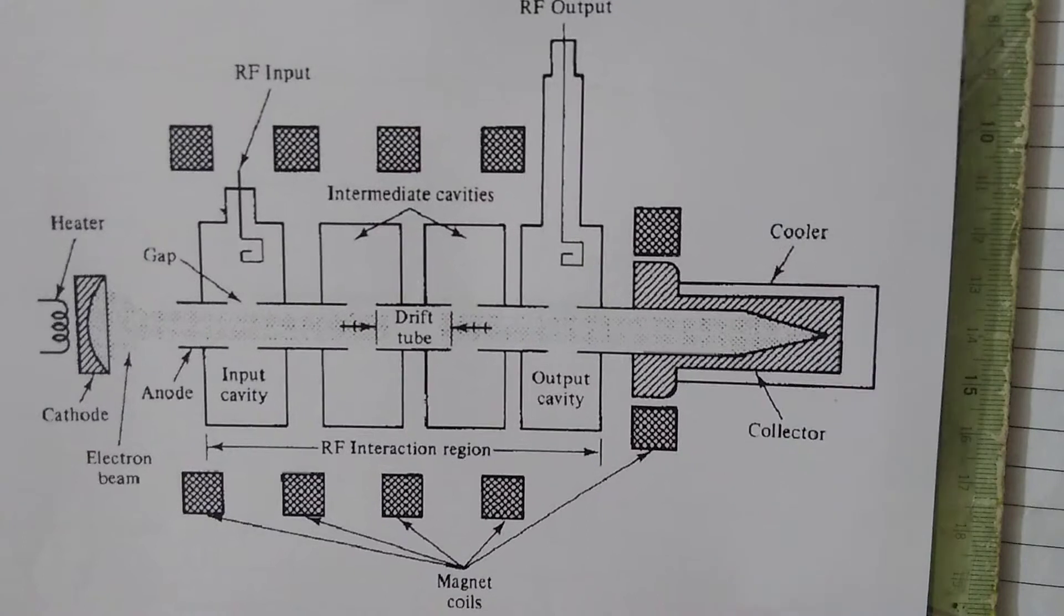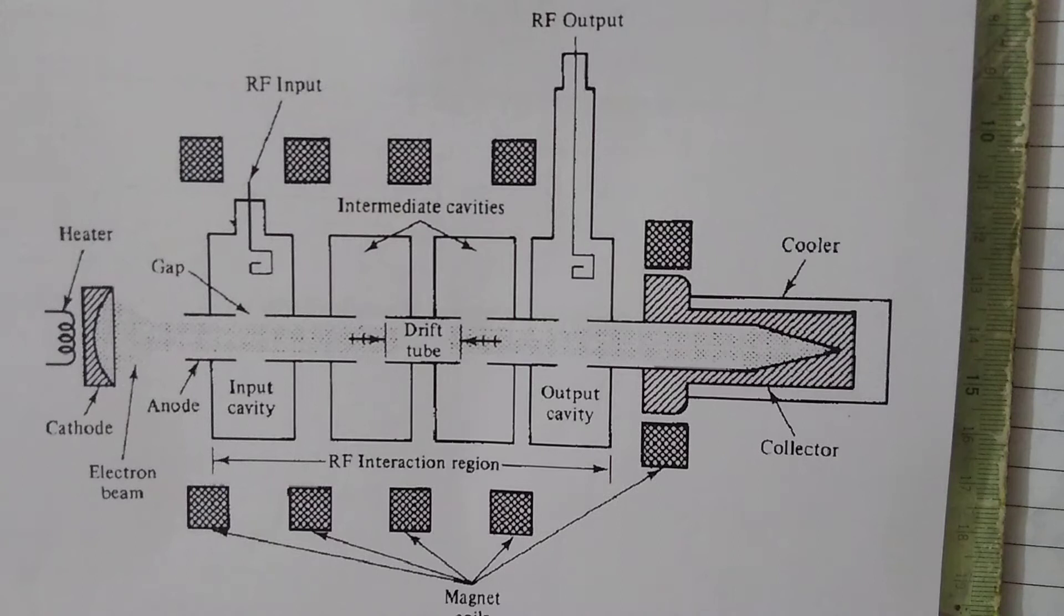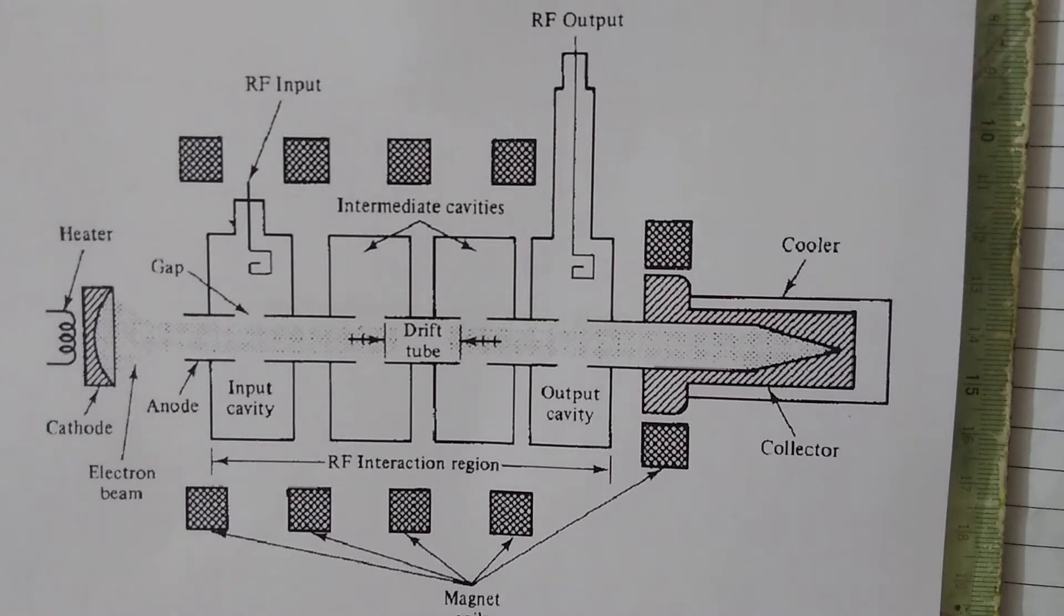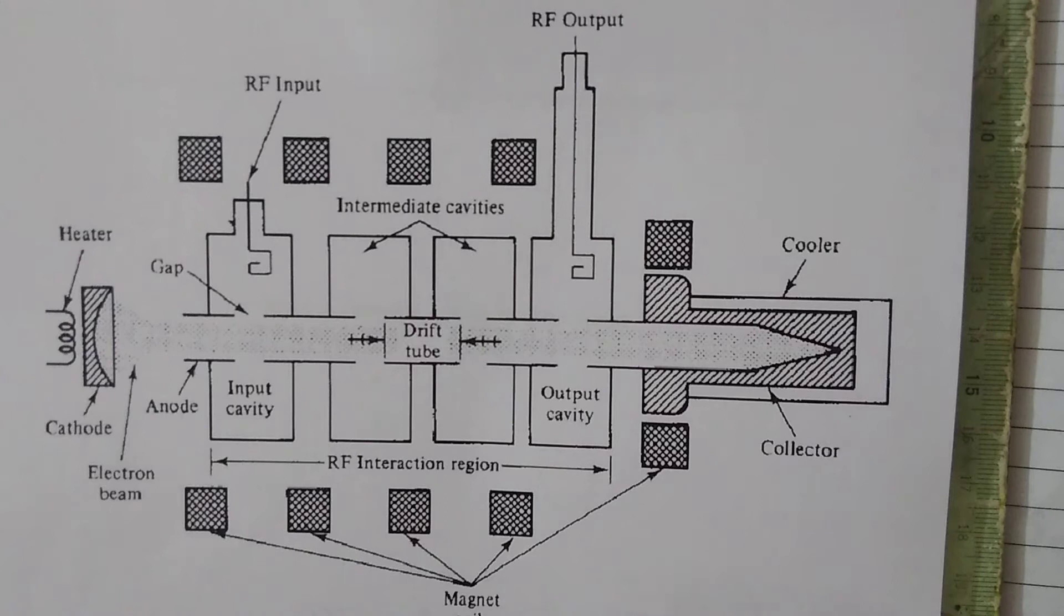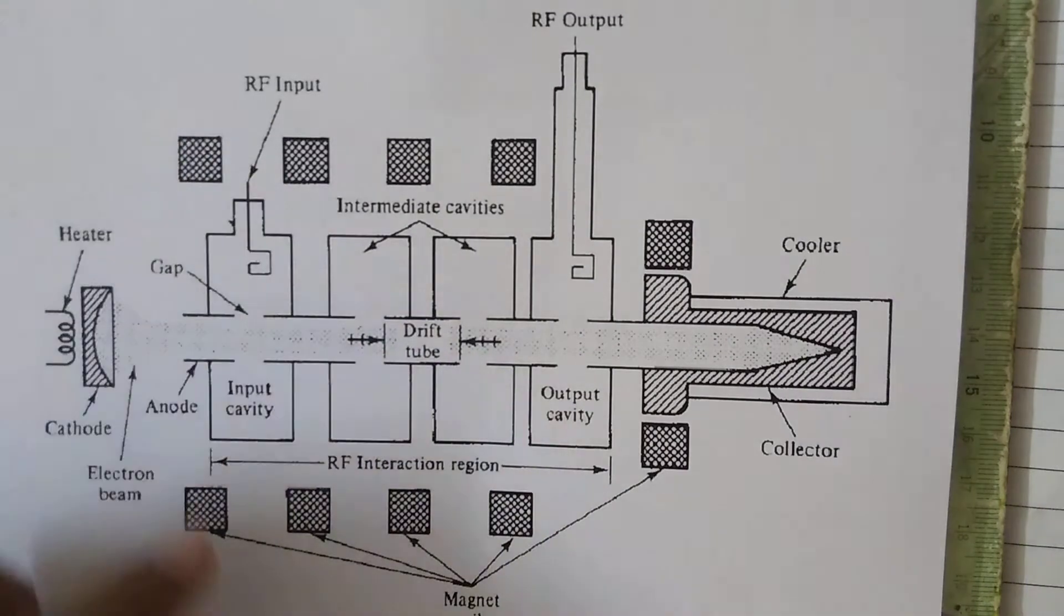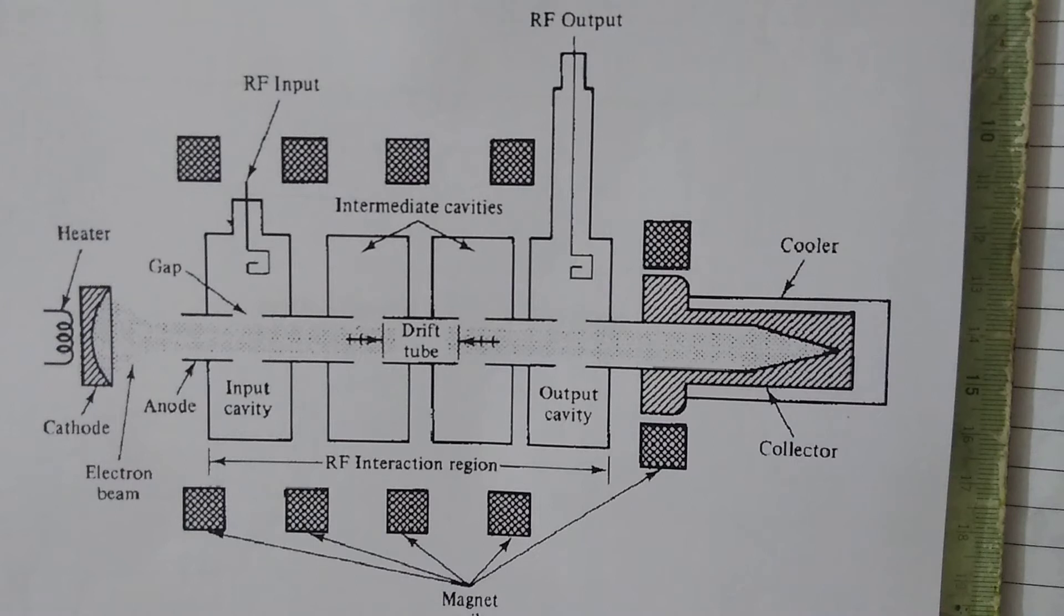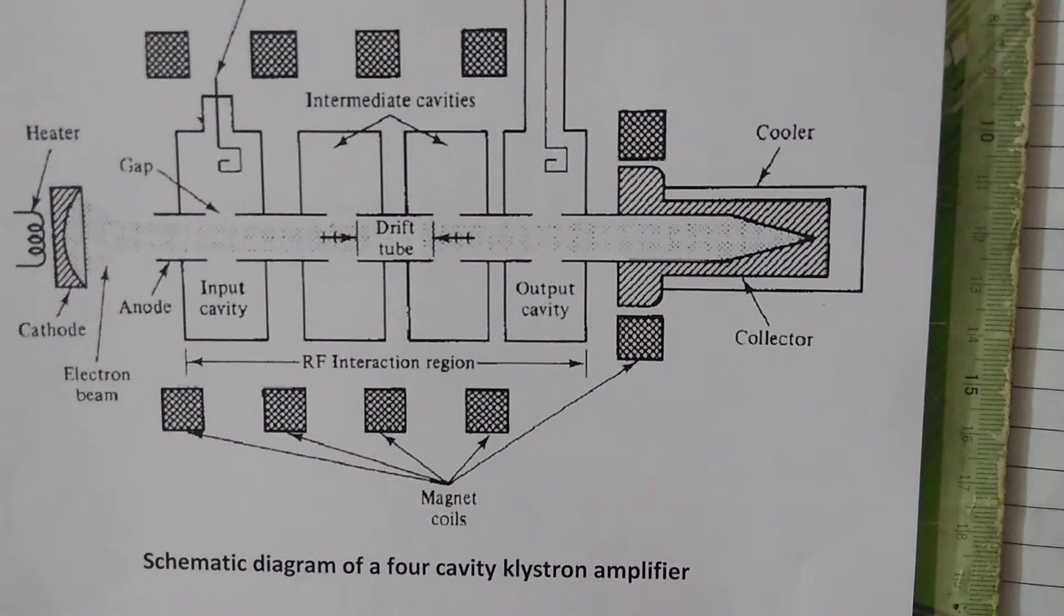The construction of a multi-cavity klystron amplifier is similar to that of a two-cavity version. The main difference is that we have added two more cavities to the tube. Focusing magnet coils are placed at the top and bottom for focusing purposes, and we have a cooler to maintain the temperature inside the tube, since very high output power is generated from this four-cavity klystron amplifier.